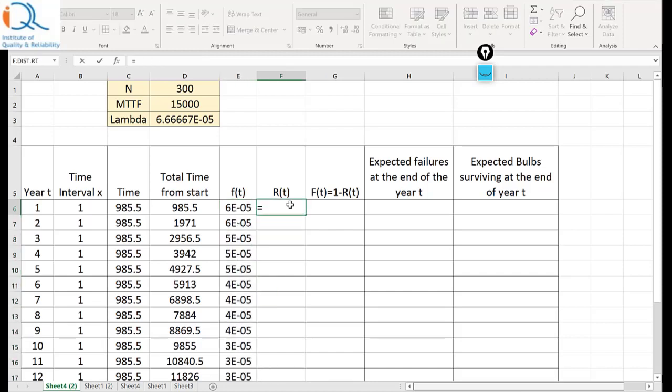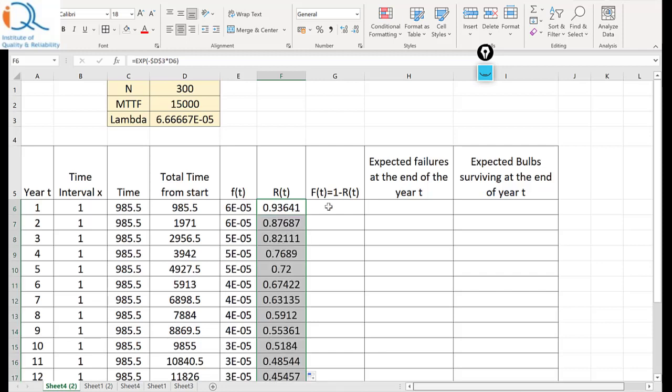The reliability will be equal to exponential of minus dollar d dollar 3 that is your lambda star total time from start is this much and I can copy that. So reliability drops down f of t will be 1 minus reliability. I can copy that also.